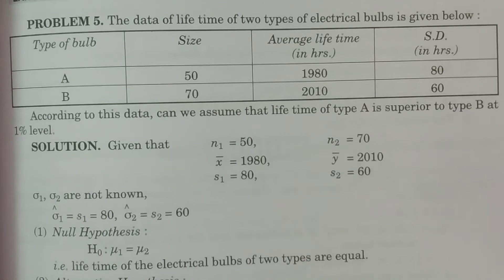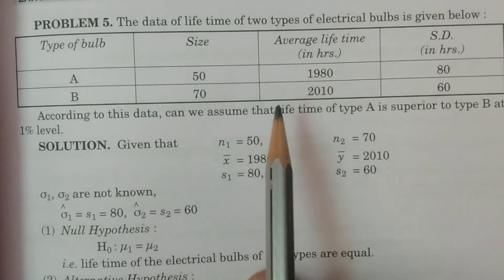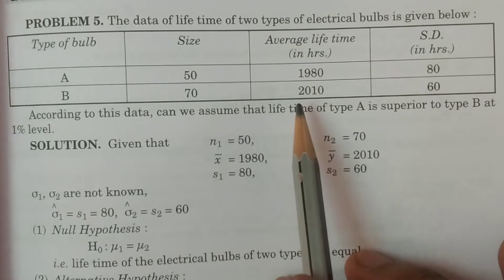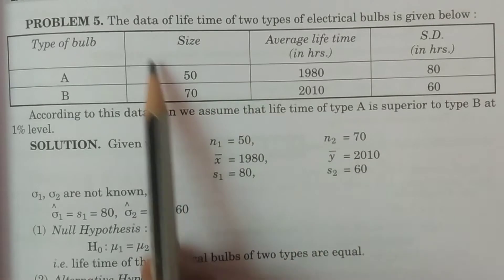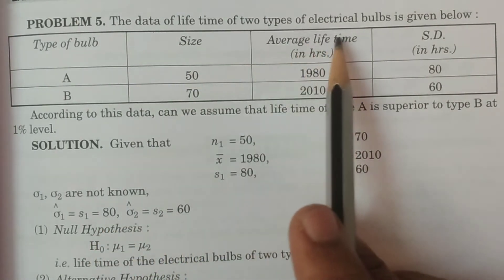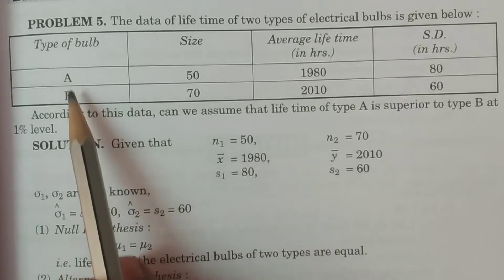To BSc statistics students: I'm explaining problems of two sample means, which is a regularly repeated question in the examination. The problem here gives data on the lifetime of two types of electrical bulbs. There is a table with type of bulb A and type B.